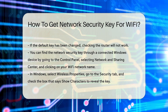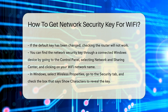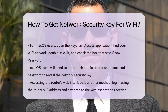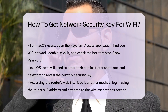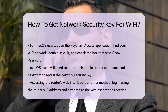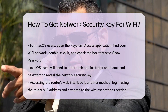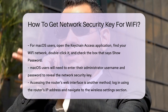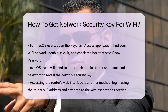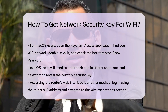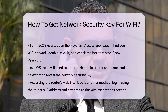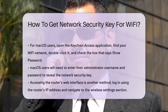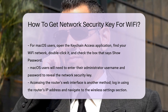For macOS users, open the Keychain Access application. Find your Wi-Fi network in the list, double-click it, and check the box that says Show Password. You will need to enter your macOS administrator username and password to reveal the network security key.